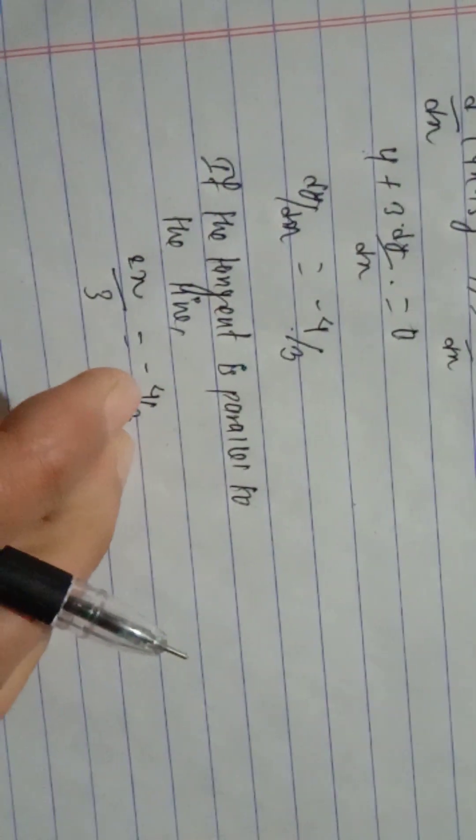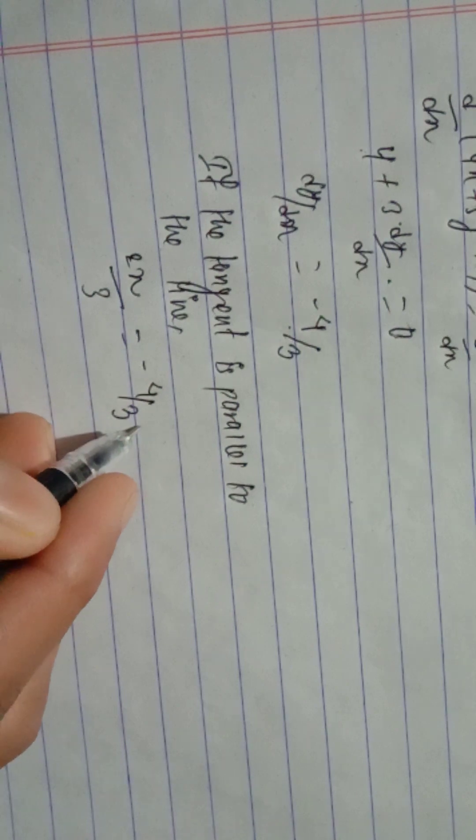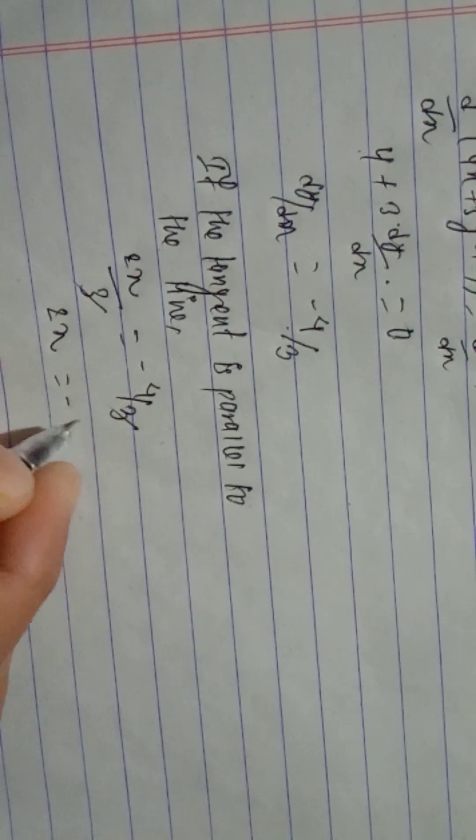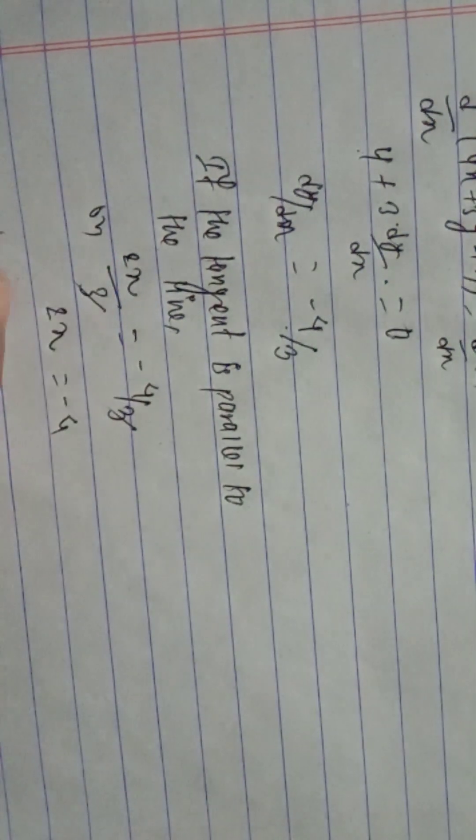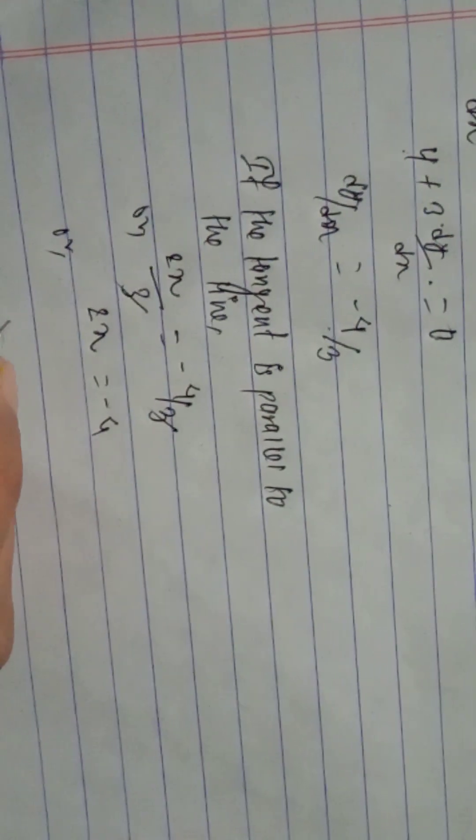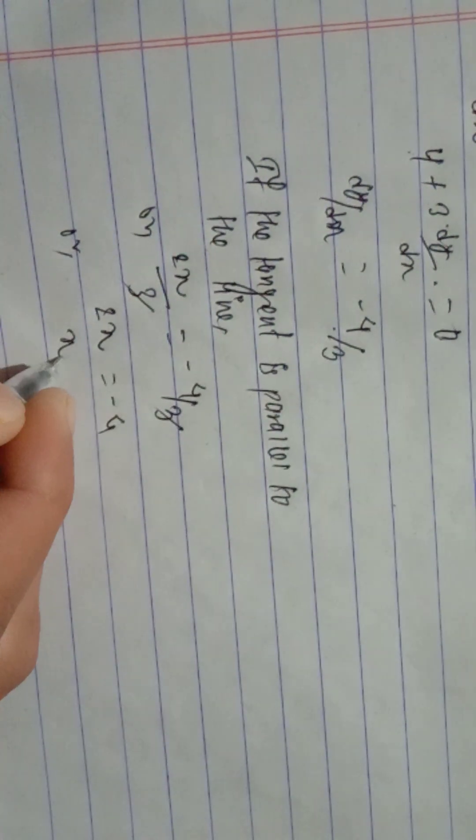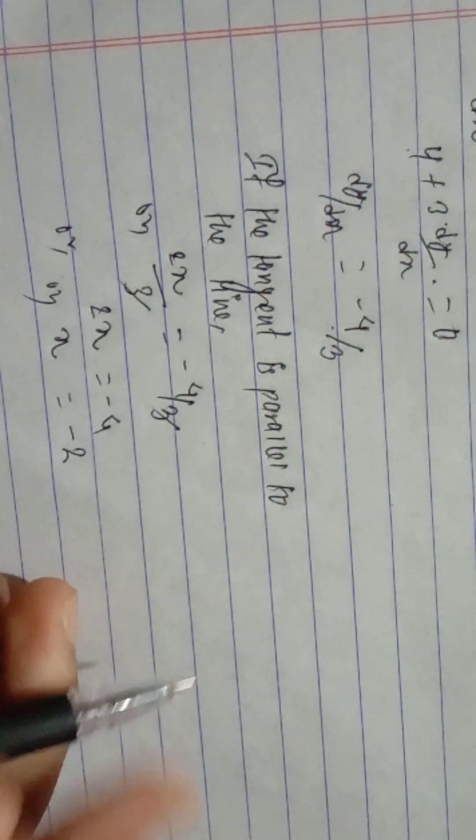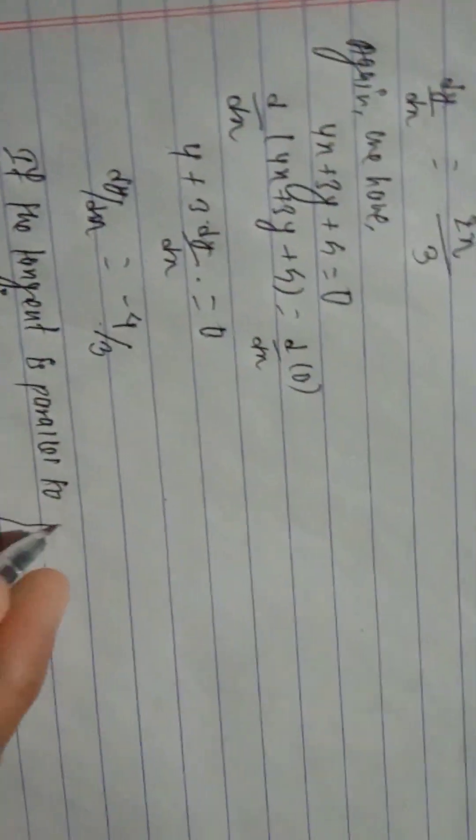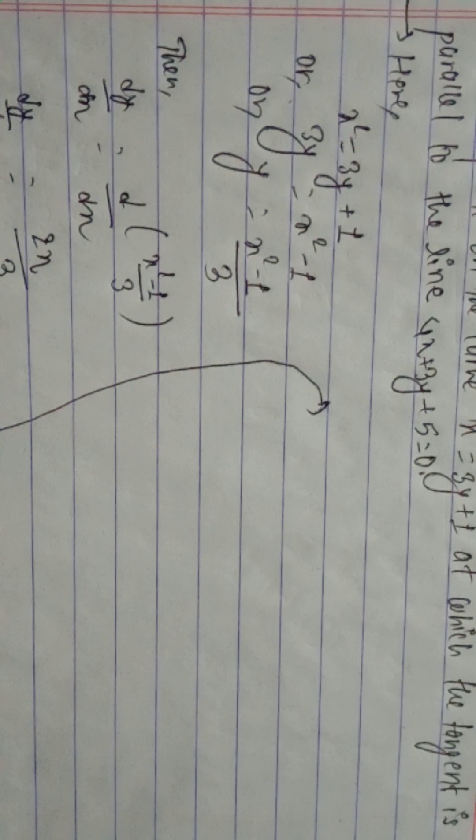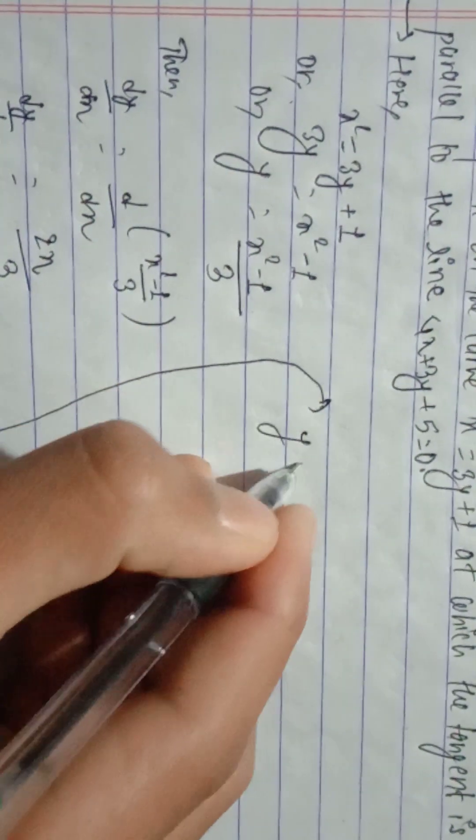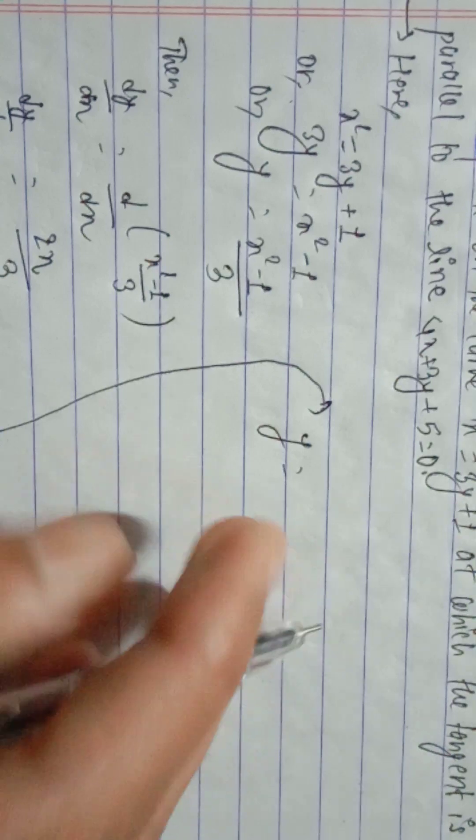The 3s cancel. 2x equals minus 4. Therefore, x equals minus 2.